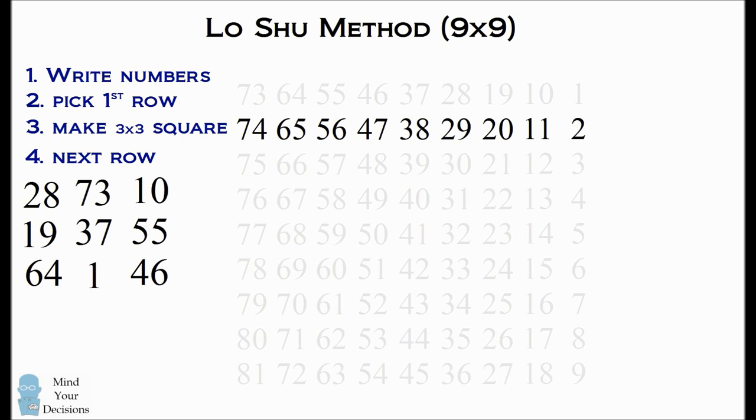But there's a nice trick we can use that's a shortcut. Notice that all of the numbers in the second row are exactly one more than the numbers in the first row. So 74 is one more than 73, 65 is one more than 64, and so on.